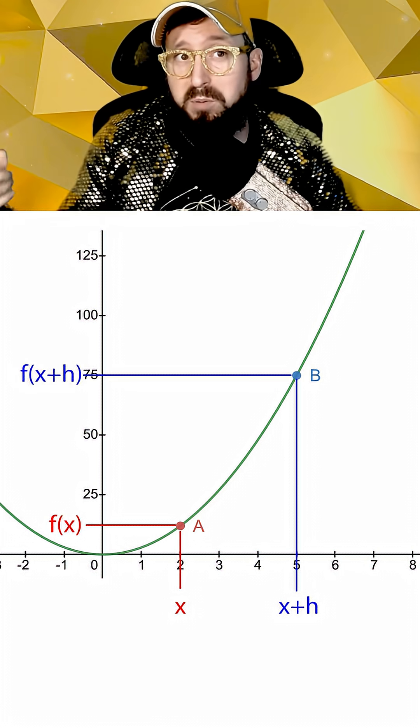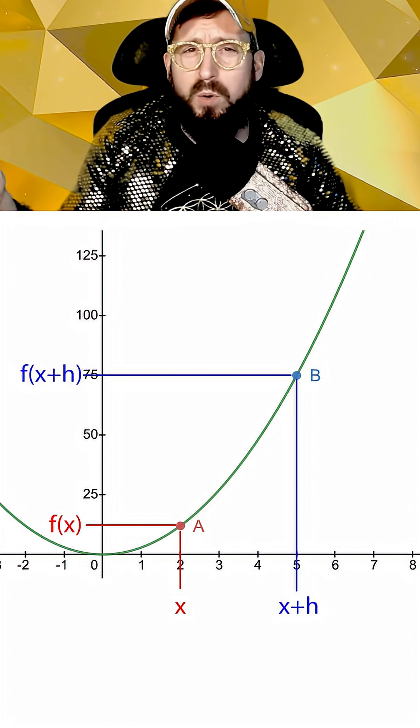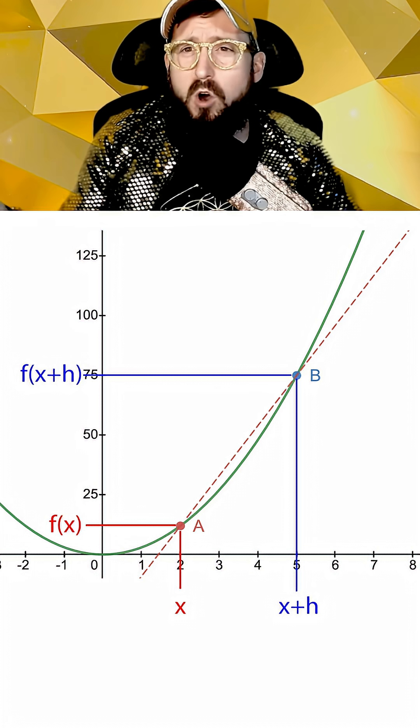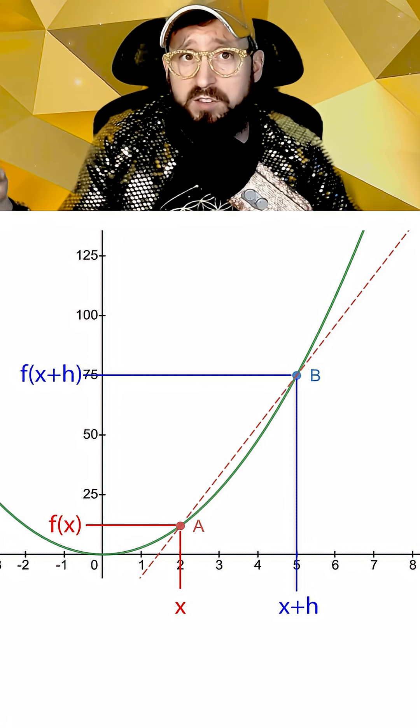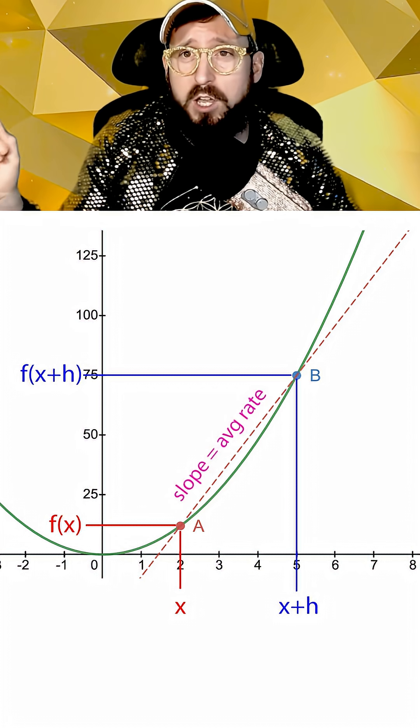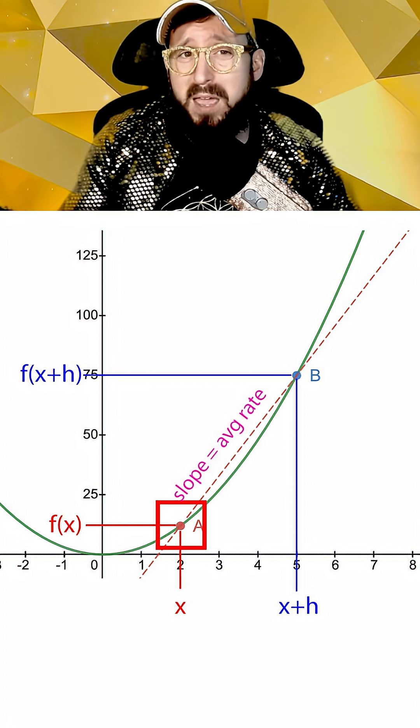And its y value is f(x+h). Now if we draw a line in between point a and point b, this would be called the secant line, and the slope of this secant line would be equal to the average rate of change of the function between point a and point b.